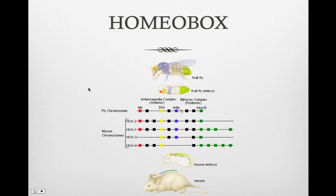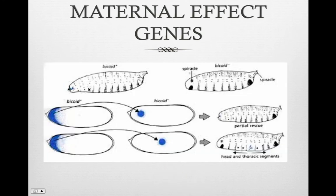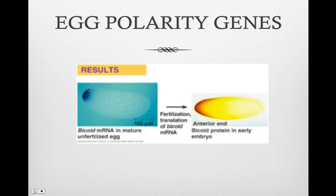Fruit flies were the organisms used for much of the studies on embryonic development. Insects are arthropods, which means they have segmented bodies. The cytoplasmic determinants in the original egg are coded for by the mother's DNA — these are called maternal effect genes. If the maternal effect gene is mutant in the mother, the offspring will be mutant regardless of the genotype, because the messenger RNA or protein from the maternal effect gene is in the cytoplasm of the unfertilized egg, making it defective, and therefore all the cells that result from it are also defective. These genes control the orientation of the egg and embryo, and are also called egg polarity genes.